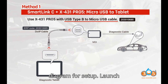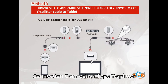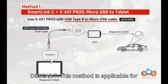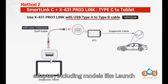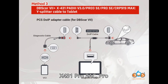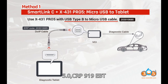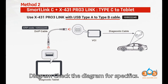Method 3: Launch X431 Pad 8 version 3.0 / Pro 3 SE / Pro SE connection. Connection type: Y splitter cable to tablet. Utilizes a PCS DoIP adapter cable for DB SCAR 7. This method is applicable for newer tablets that support the DB SCAR 7 adapter, including models like Launch X431 Pro 3 AC, Pro 3 Apex, Pro 3 S Plus version 5.0, CRP 919EBT, and CRP 919XBT. Check the diagram for specifics.